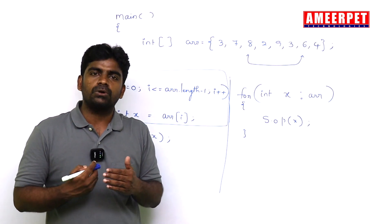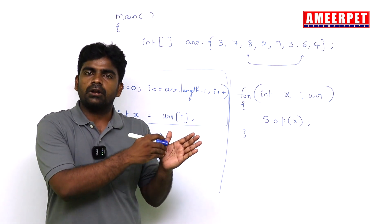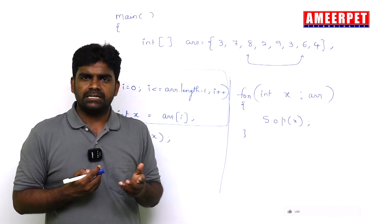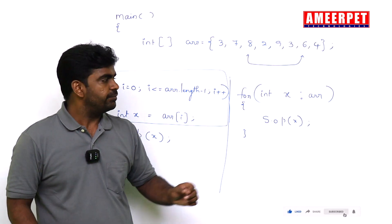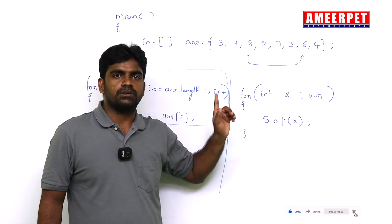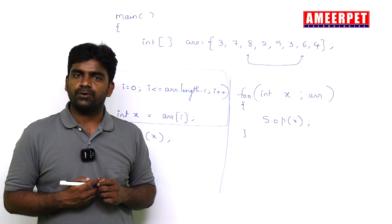We will do on all elements of array. So that's why most of the cases, 90 percent, we use for-each loop only to process the elements of array. Hope you understood. Please practice. Thank you all.